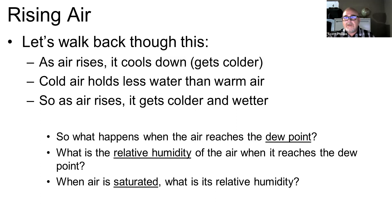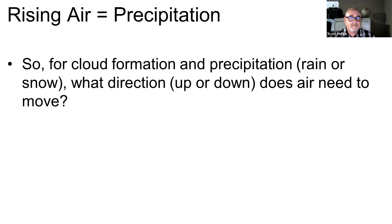At that point, the relative humidity is at 100%. Saturation is when it reaches that point. So the short of this is: the primary way that condensation is brought about in nature is by moving the air upward and cooling it down.